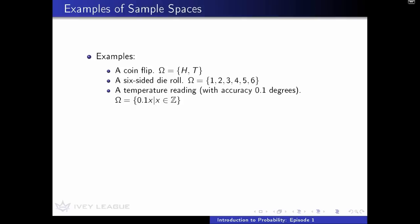Here are some examples of the sample spaces from the random processes we defined previously. A coin flip consists of two possible elementary events: heads and tails. A six-sided die roll can take on any of the integers from one to six, so omega is the set of all numbers from one to six. Supposing our temperature gauge has an accuracy of 0.1 degrees, then omega can take on any value that is a multiple of 0.1.